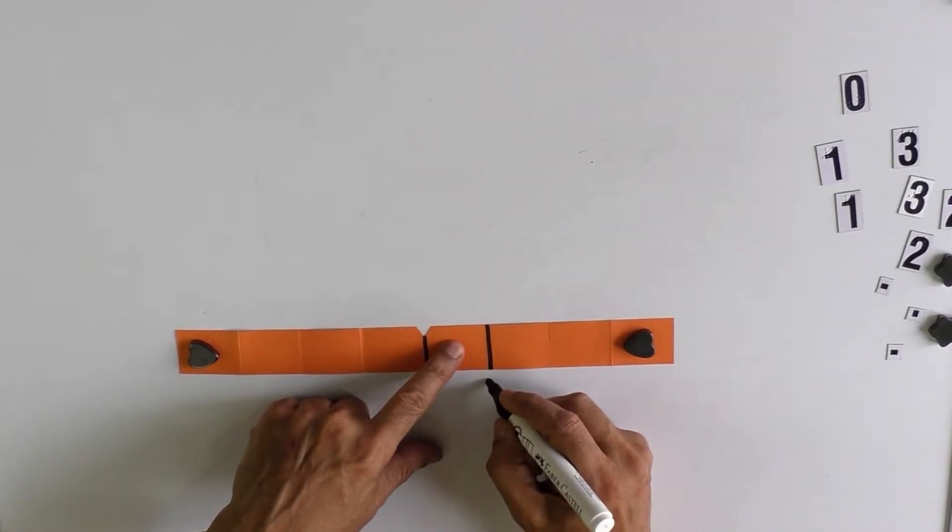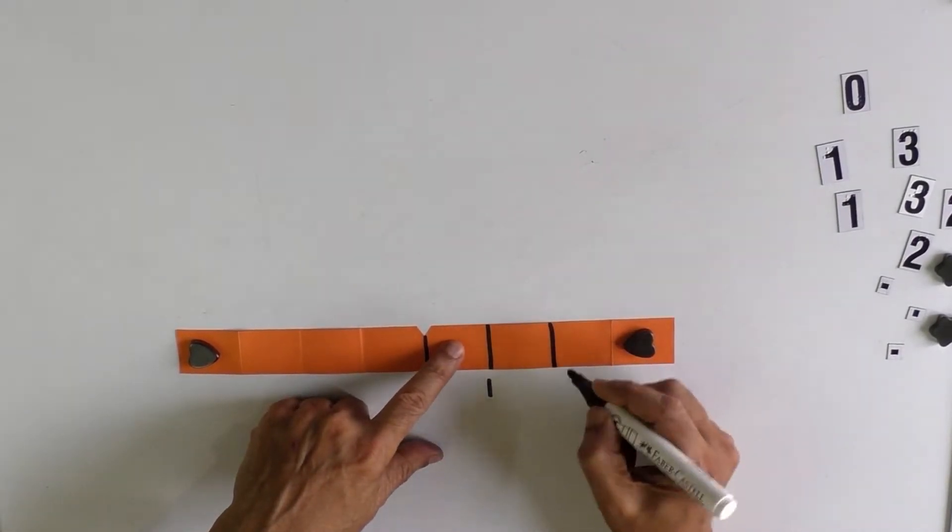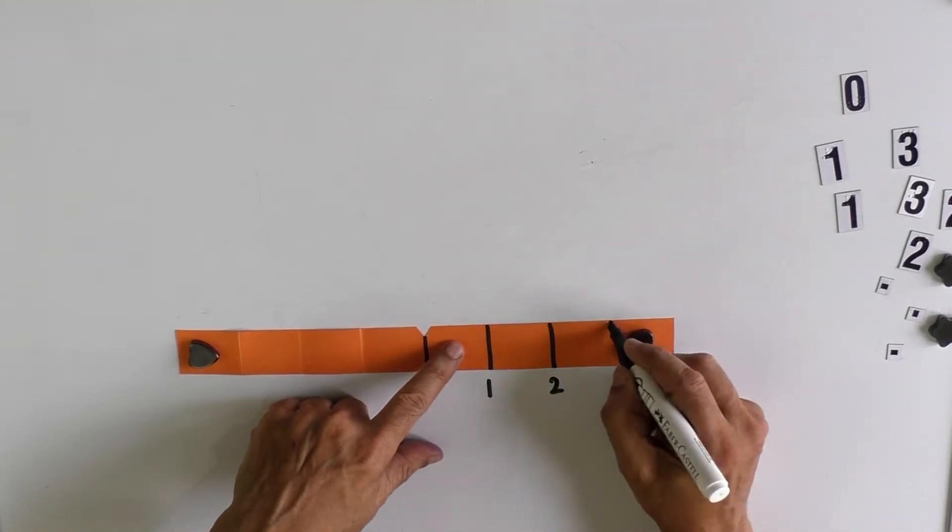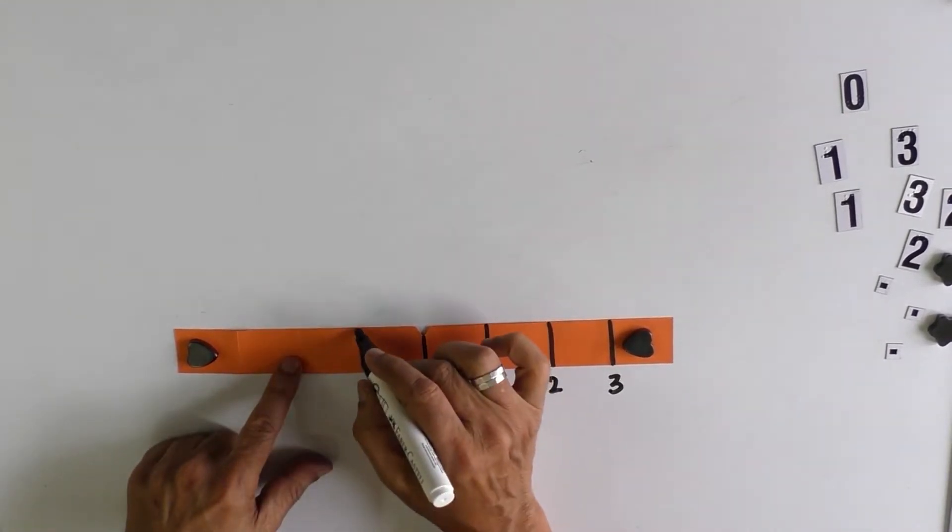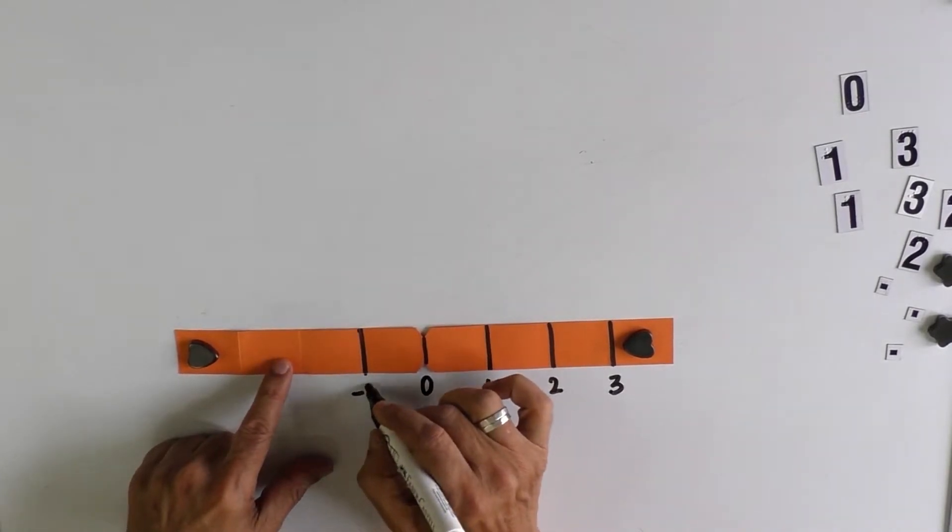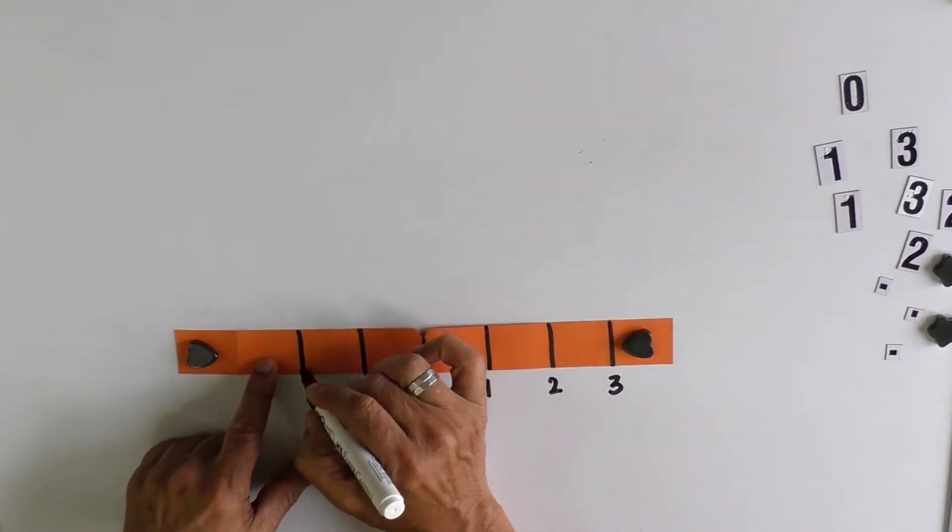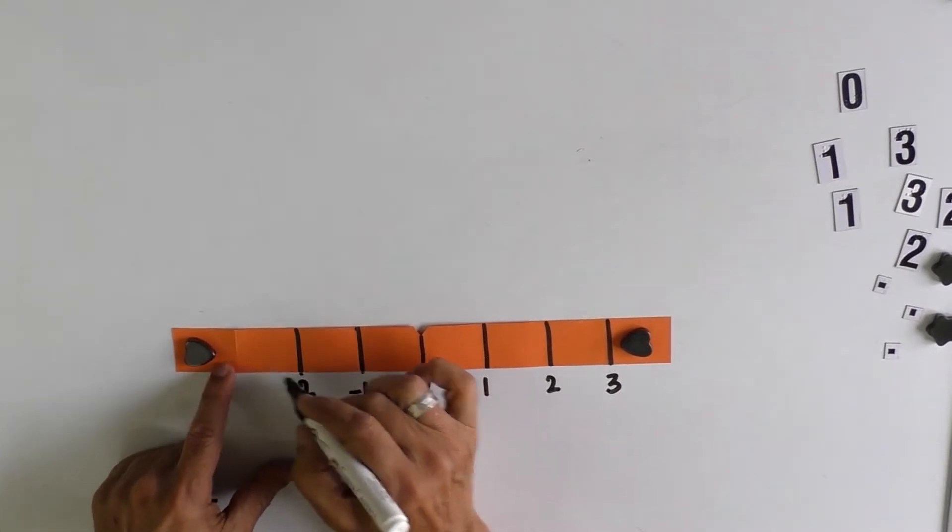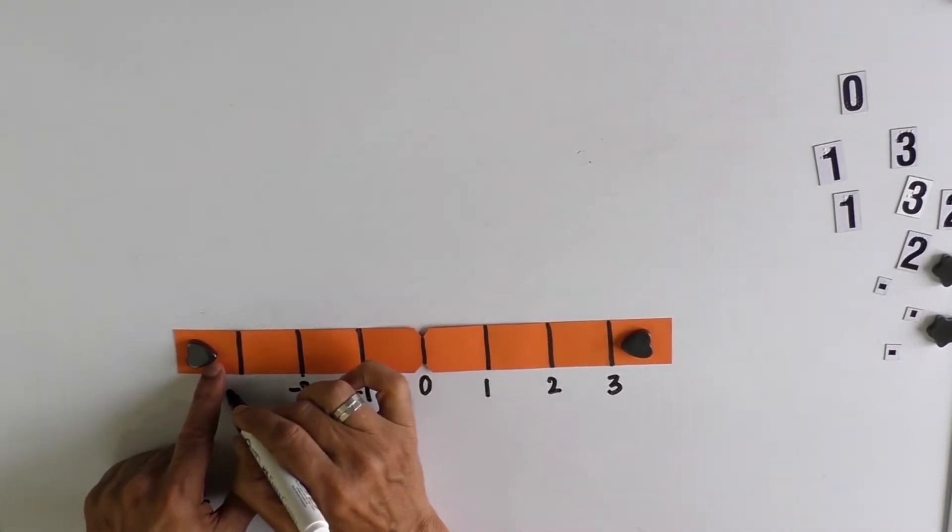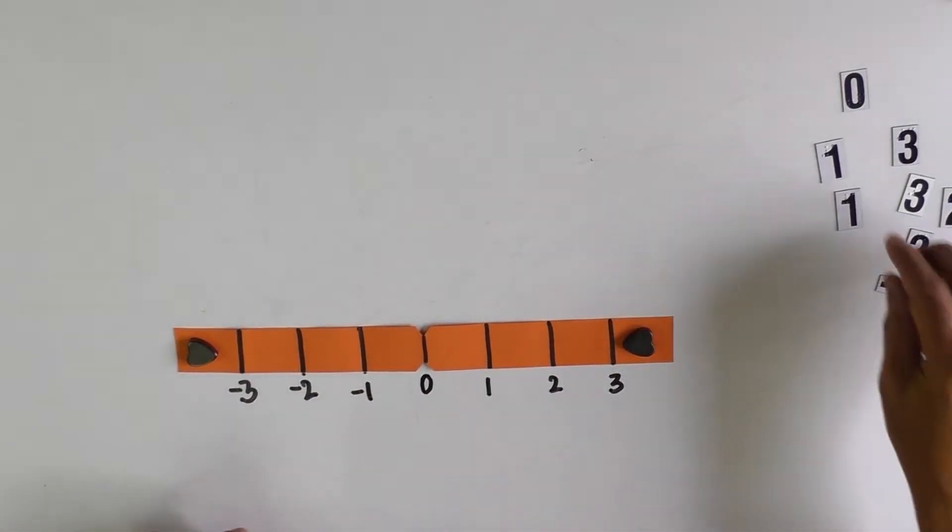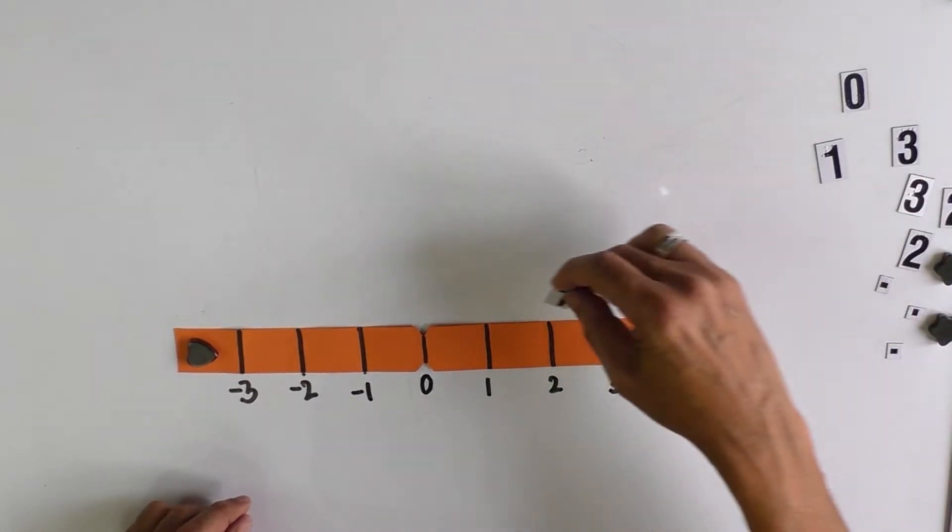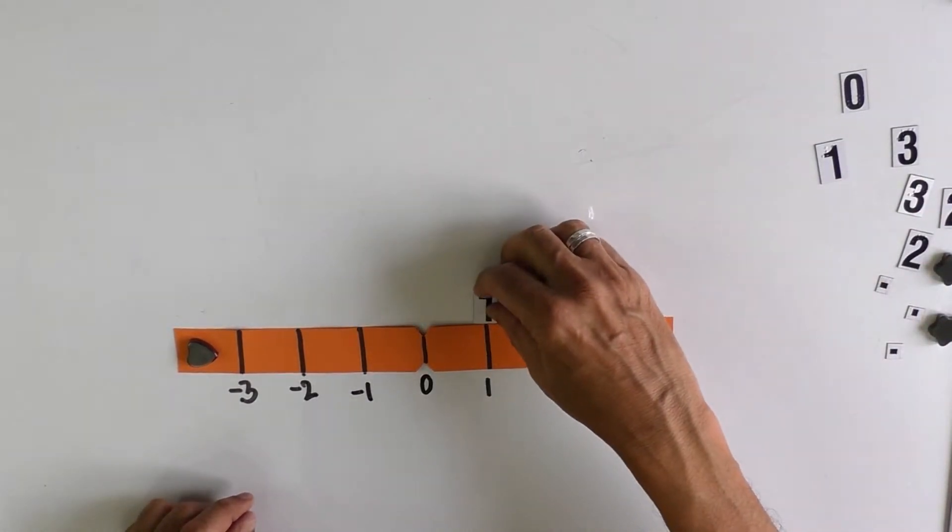Then 1, next one as 2, next one as 3. And similarly on the negative side, this is minus 1, this is minus 2, and this is minus 3.